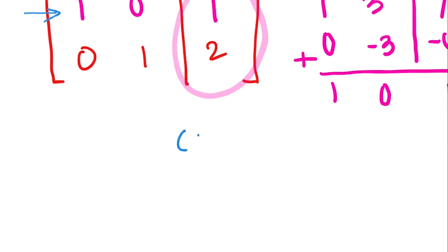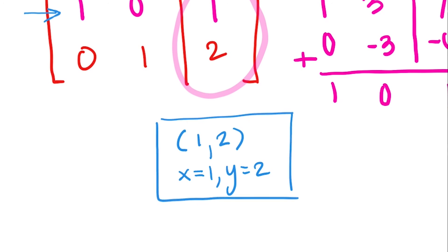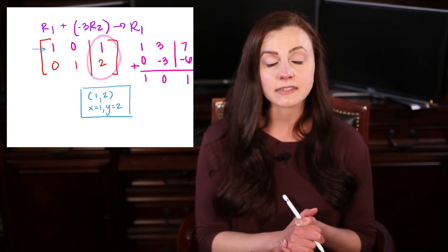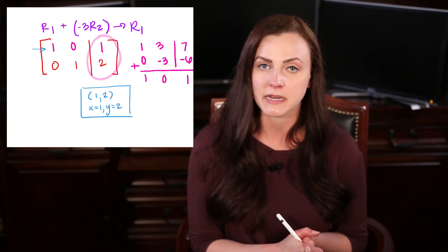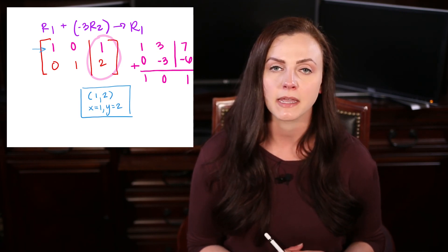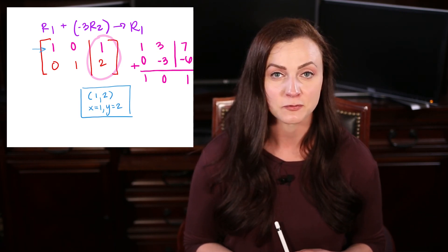So the ordered pair is 1 comma 2. But you can also just write it as x equals 1, y equals 2. And that is how to use Gauss-Jordan elimination to solve a linear system by getting it into reduced row echelon form.